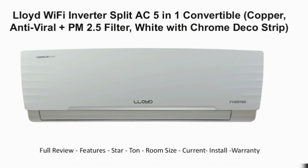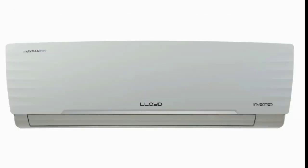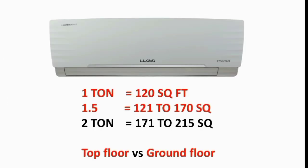Star rating, how much cooling the AC provides for your room, current units you can use — we will cover these one by one. First, let's look at the AC capacity guide based on room size. For 120 square feet, you can use a 1-ton AC. For 150 square feet, a 1.5-ton AC is suitable. For 215 square feet, a 2-ton AC is recommended. This is the first factor.